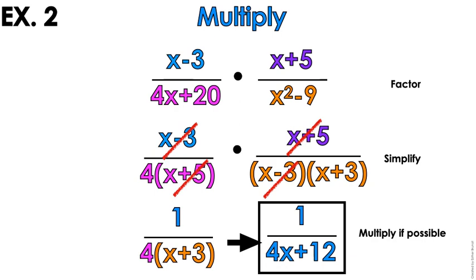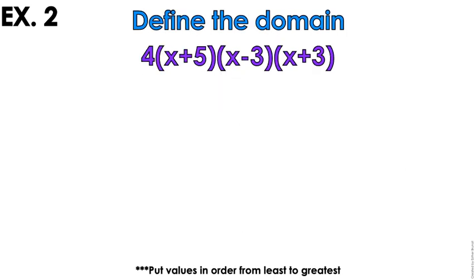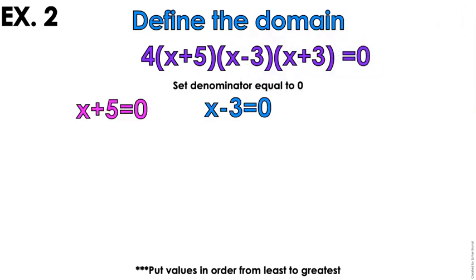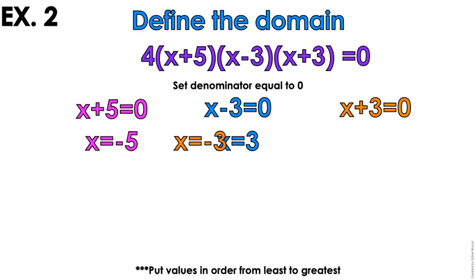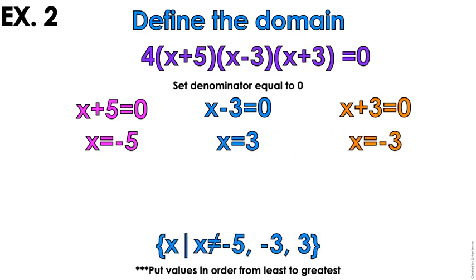For problems like this, we like to make sure that we define the domain. So you're going to set your denominator equal to 0. From that last problem, your denominator in factored form was x plus 5, x minus 3, x plus 3. The domain is all real numbers except for negative 5, negative 3, and positive 3.